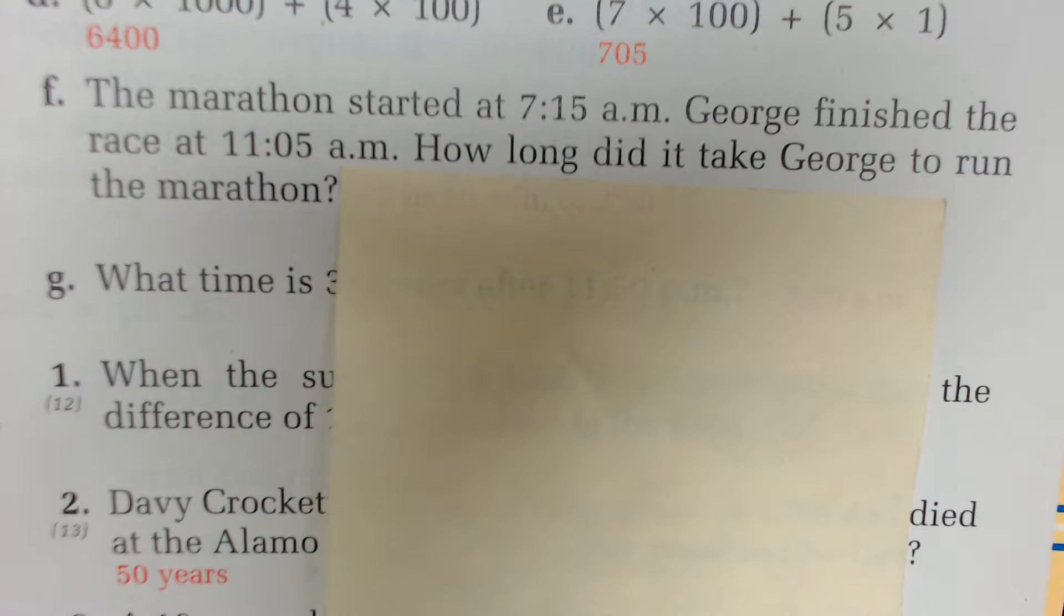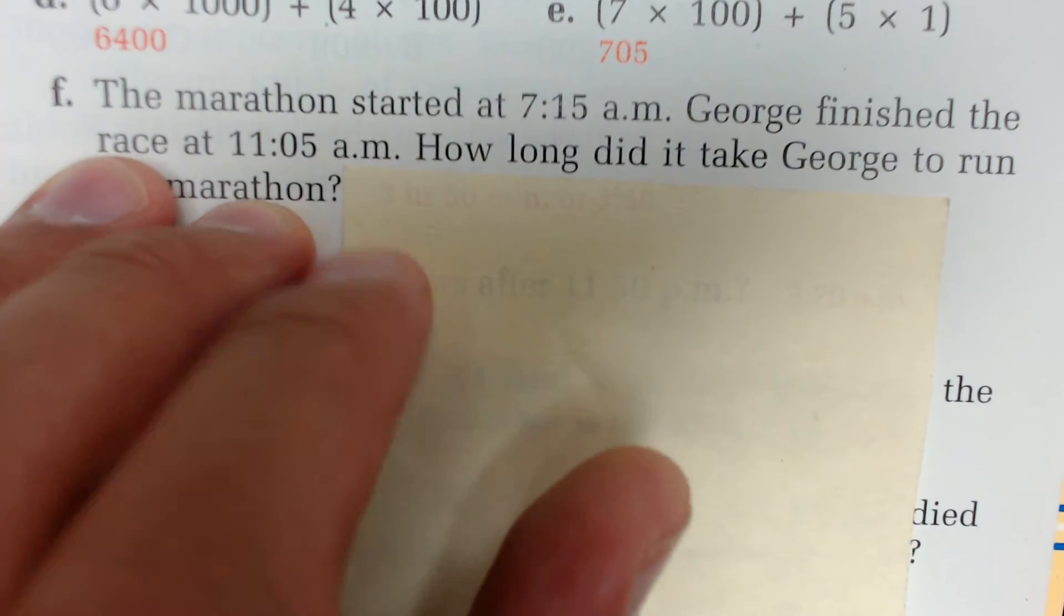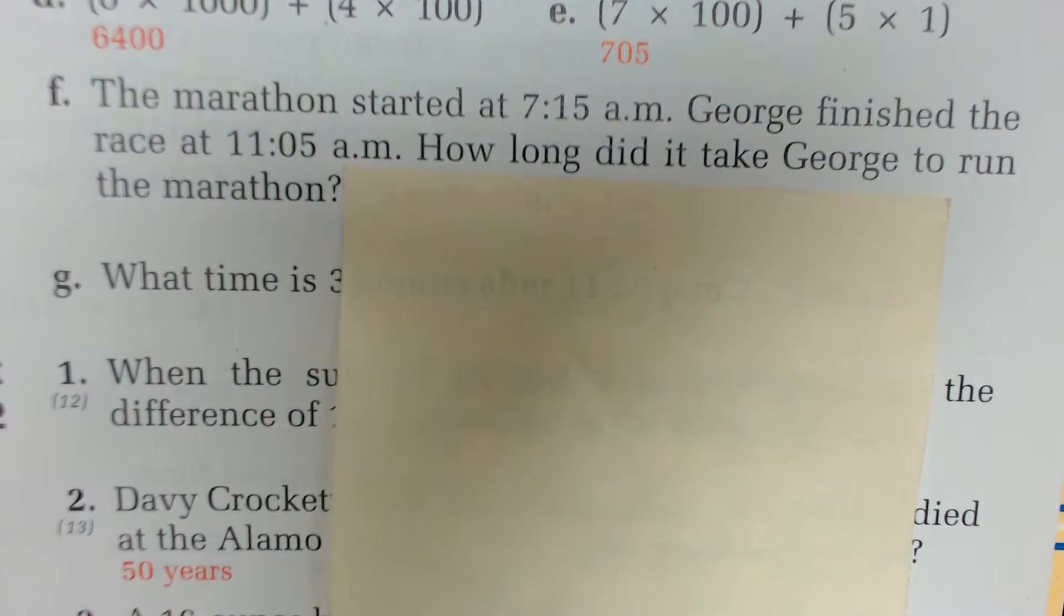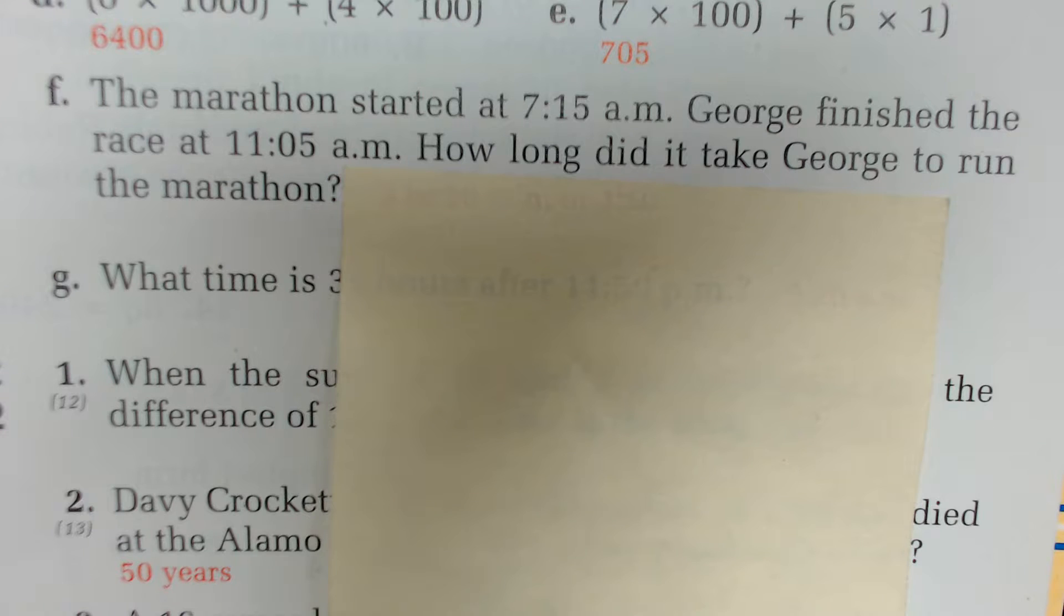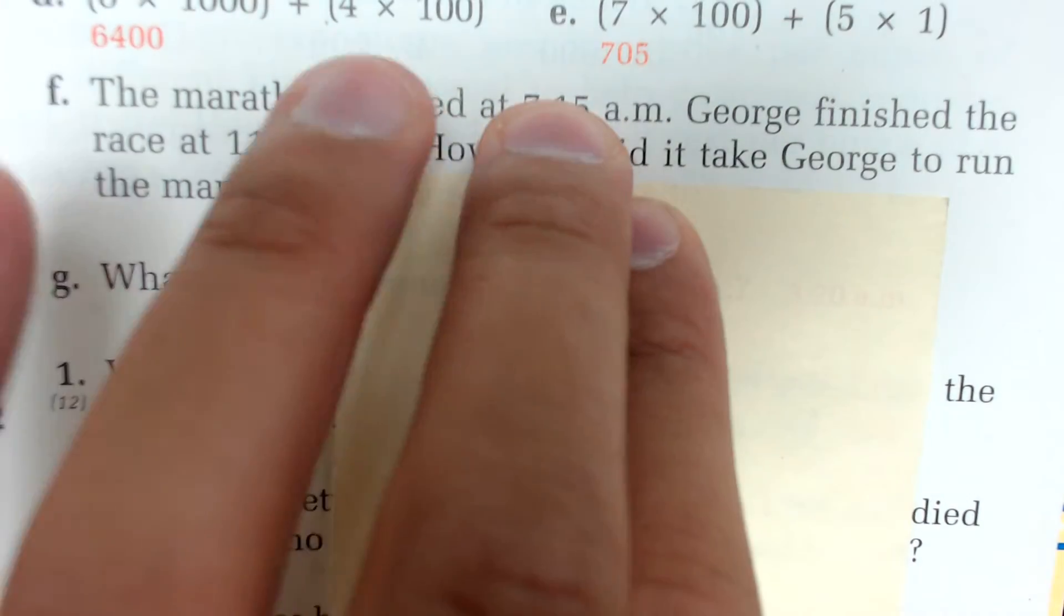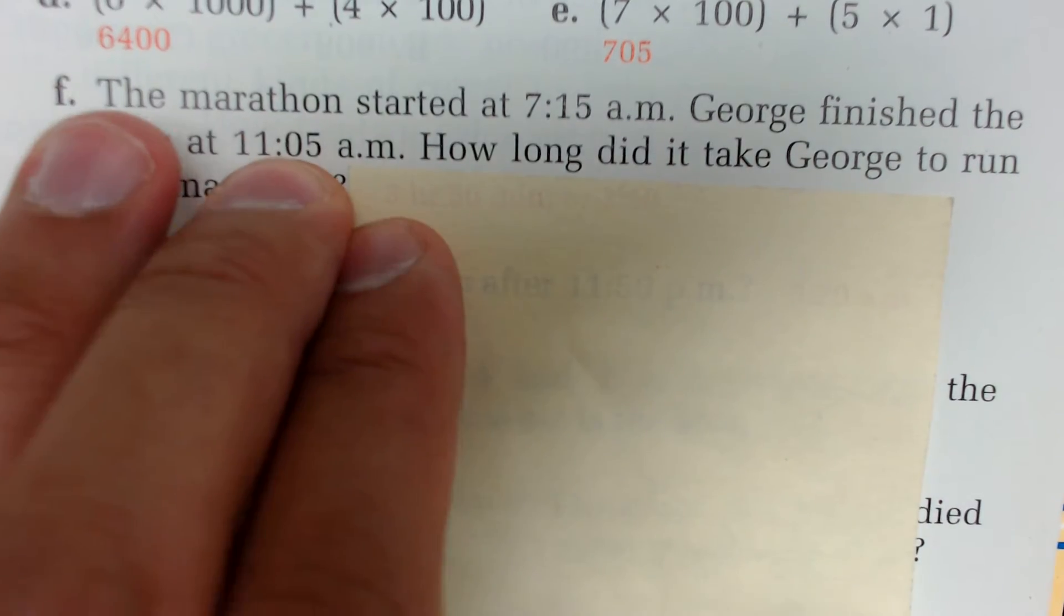It says the marathon started at 7:15 a.m. George finished the race at 11:05 a.m. How long did it take George to run the marathon? If you notice, this story problem is a later-earlier-difference problem. That's what they call it. So we have an earlier time and then we have a later time. So we're going to take the later time, subtract the earlier time. Let's go ahead and do that on our paper.